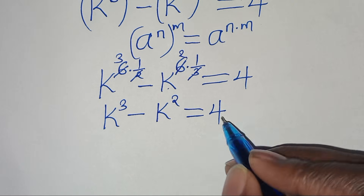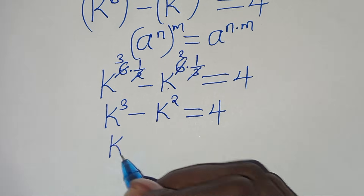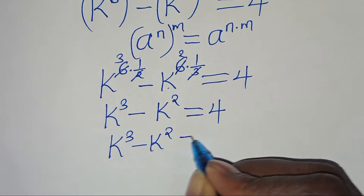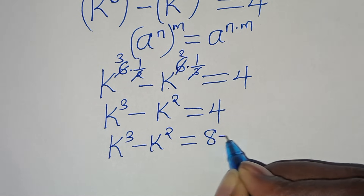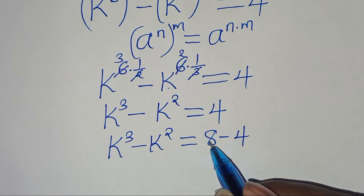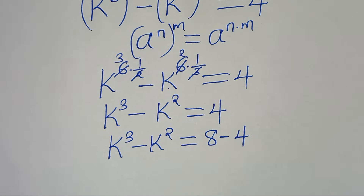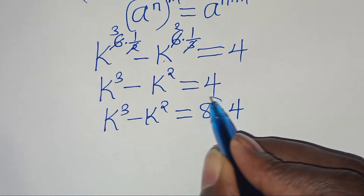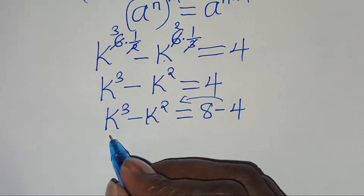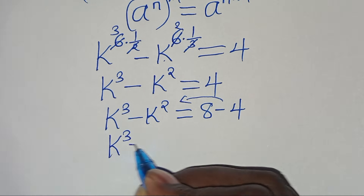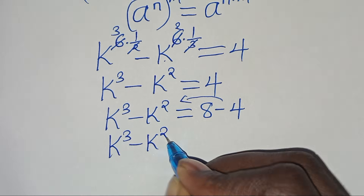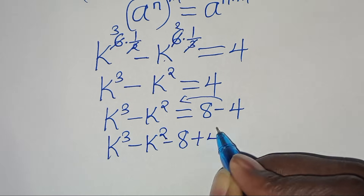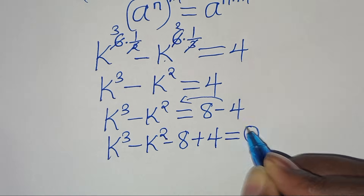Now, the next step is that we can express 4 as 8 minus 4, since 8 minus 4 is the same thing as 4. We take 8 minus 4 to the left hand side, so that we have k to the power of 3, subtract k to the power of 2, subtract 8, then plus 4, this is equal to 0.